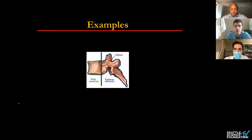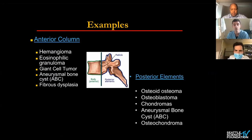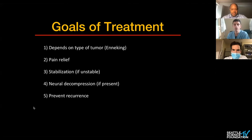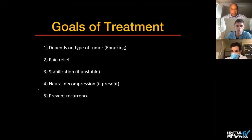In terms of benign spine tumors, you can think about them based on their location — they have a predilection for either the anterior part of the spine or the posterior elements. Hemangioma, eosinophilic granulomas, giant cell tumors, ABCs, and fibrous dysplasia tend to favor the anterior column. For posterior elements, the most common ones are osteoid osteoma, osteoblastoma, and chondromas. The goals of treatment for benign primary spine tumors depend on the type, and stabilization and neural decompression are indicated if instability and neural compromise are present.